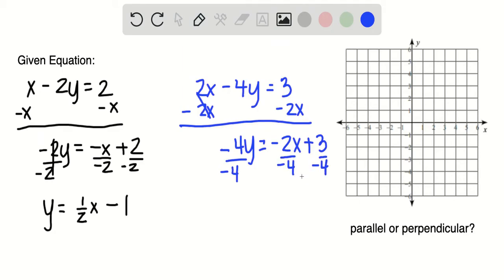So that I have y is equal to negative 2 divided by negative 4, which is a positive one half x, and then minus 3 fourths.